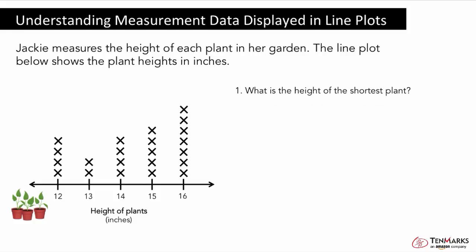Question 1: What is the height of the shortest plant? Since we only want to know the height of the plant and not how many plants, we can look at the numbers below the line plot. The smallest height on the line plot is 12 inches, so the shortest plant is 12 inches tall. In this lesson, you learned how to understand measurement data shown in line plots. Thanks for watching!